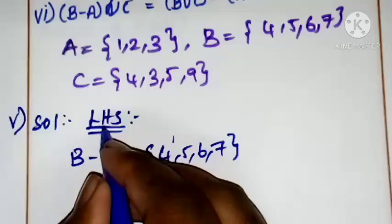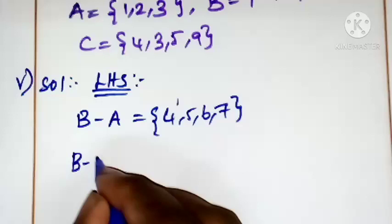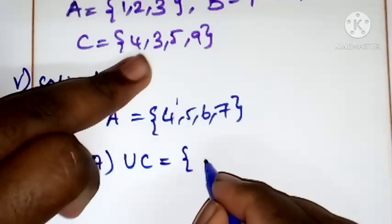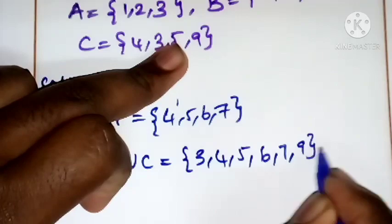This is B-A union C. Here the elements are 3, 4, 5, 6, 7, 9. This is equation number one.